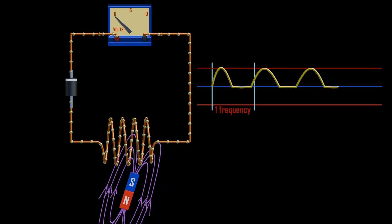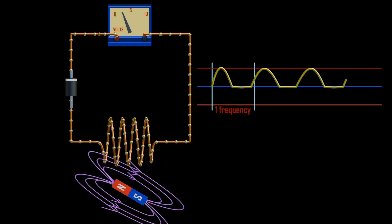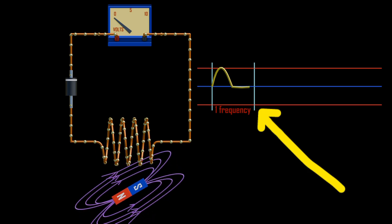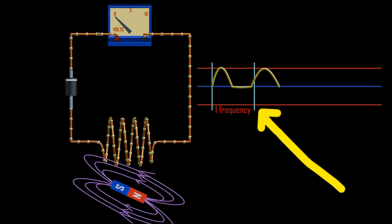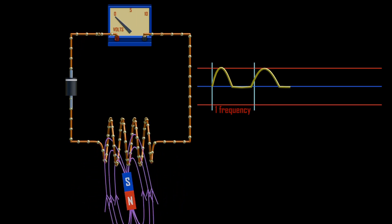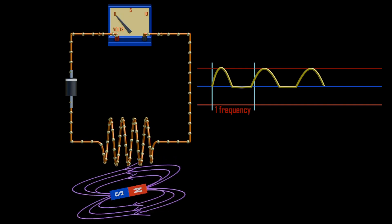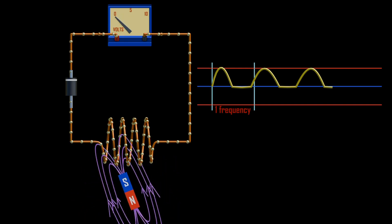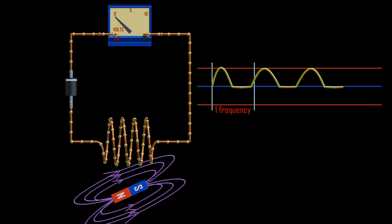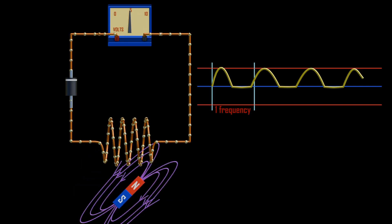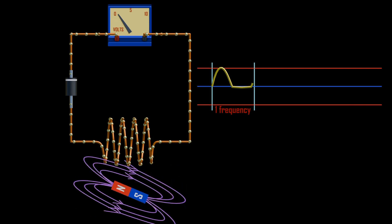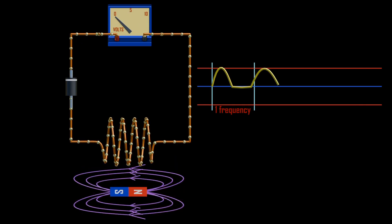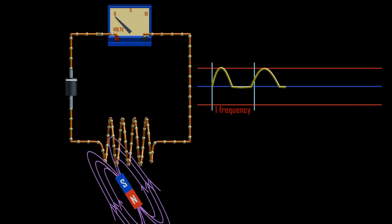We will get a pulsating direct current flowing in one direction. As we can see, during the positive half cycle the current flows, and during the negative half cycle the current is blocked. The diode is allowing current 30 times and blocking current 30 times per second for a 60 hertz frequency. This is a pulsating DC current.